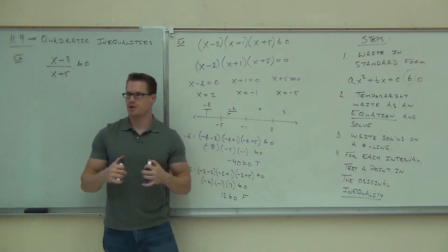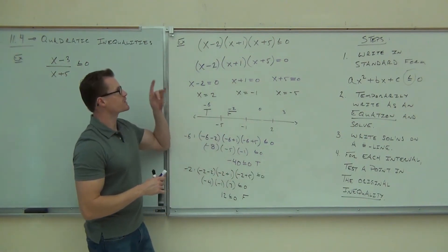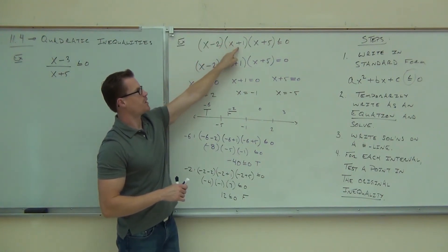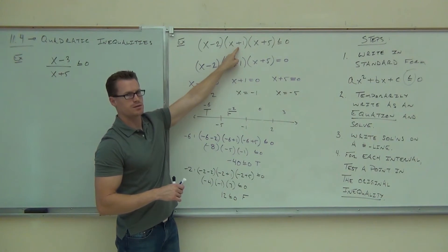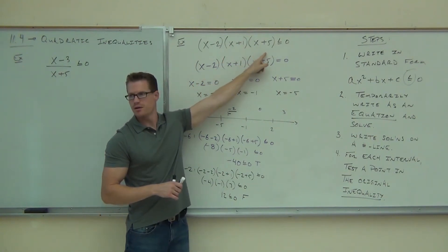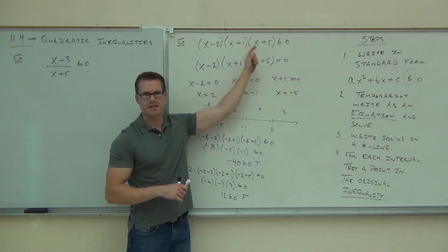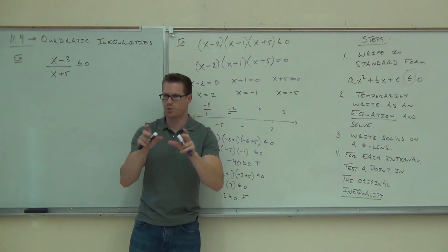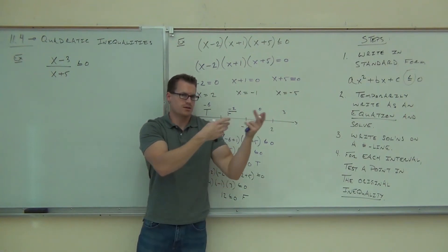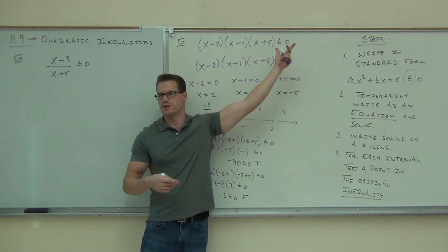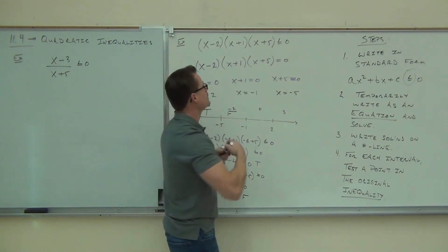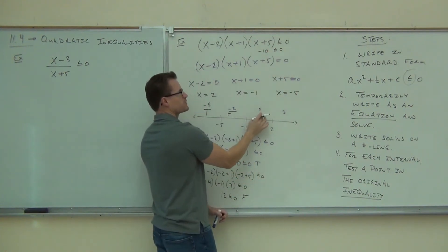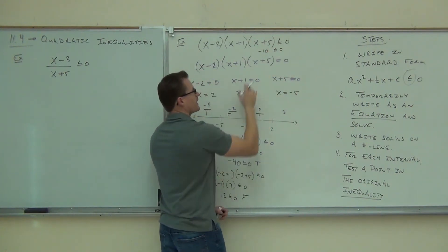Now you're going to check 0. I'm going to kind of do these just in our heads here. If we check 0, you're going to get negative 2 times positive 1 times positive 5. Are you with me on that? Negative 2 times positive times positive - is that a positive or a negative? Negative. Do you see how the signs are what is important for this problem? It's comparing to 0 over here. So you're just checking whether it's positive or negative, basically. This is going to be negative 10 less than or equal to 0. Is that true or false for this one? True.